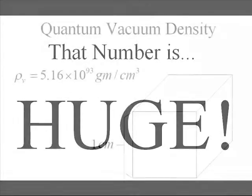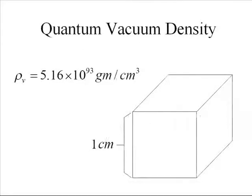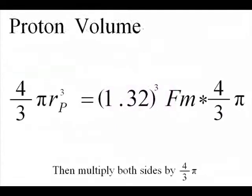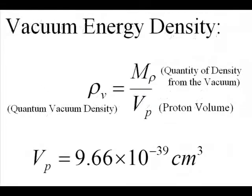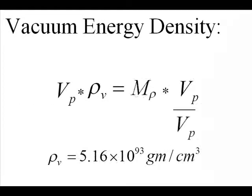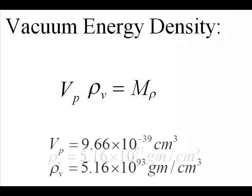Then we calculate how much vacuum energy would exist inside of a proton which has a radius of 1.32 femtometers, multiplied by 4/3 pi r cubed to get the volume. A density is mass per unit volume, so if you multiply a density by a volume the V's cancel to give the amount of mass that would be contained within a proton volume.